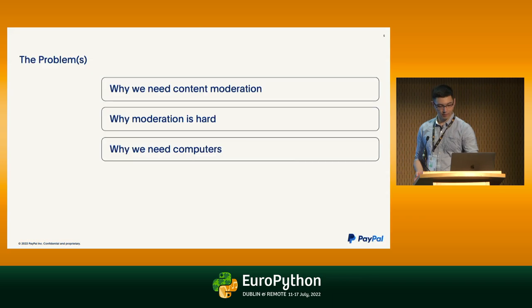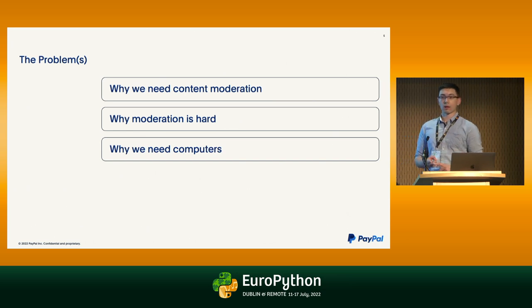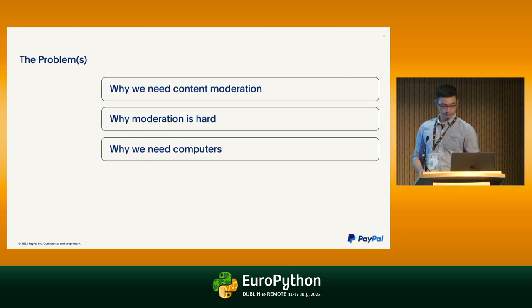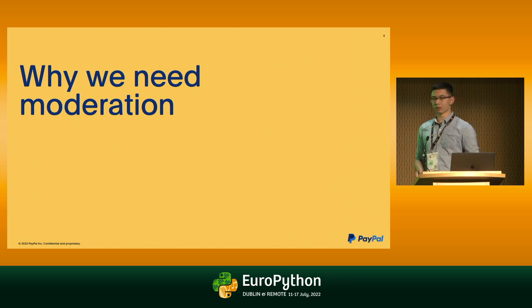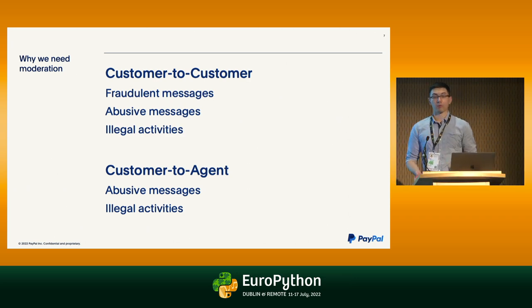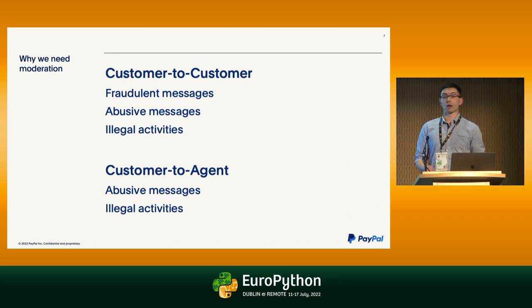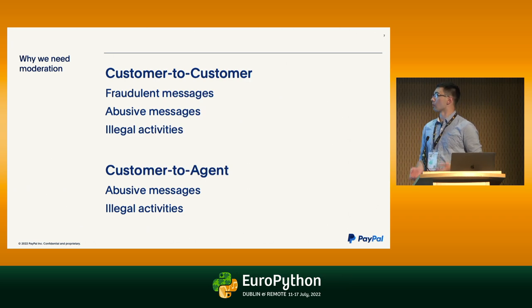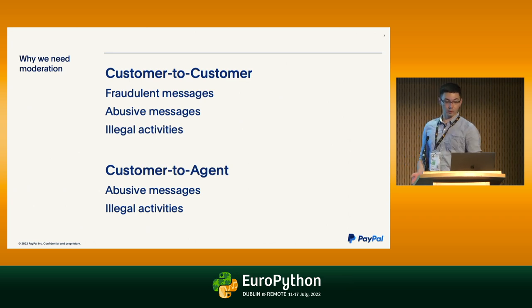Starting off with the problems we ran into — there are basically three big ones. First, why we need content moderation. Second, why moderation is hard, not just for computers. And third, why we need computers to help out. Why we need moderation isn't too difficult — it basically boils down to sometimes people are mean. There are two main types of interactions: customer-to-customer interactions where people are talking to each other, and customer-to-agent interactions where customers are talking to PayPal agents. In general we're watching out for abusive messages, illegal activities, or fraudulent messages, because we don't want to help facilitate these.